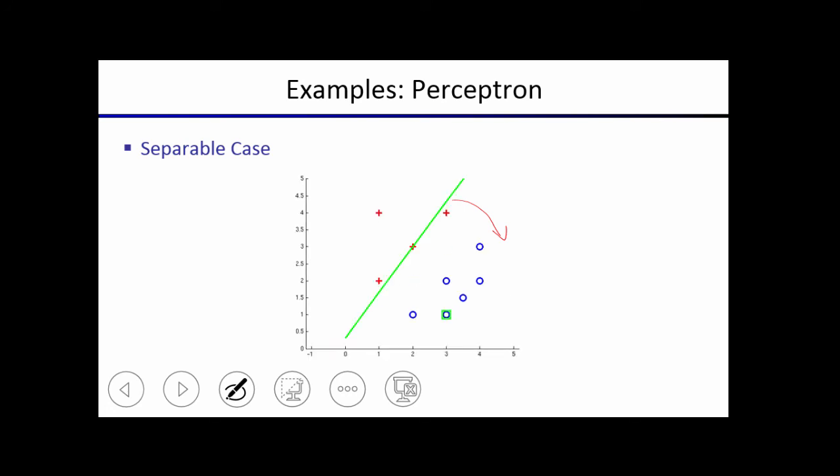And then you look at another point which will move it back in the other direction. And it keeps on thrashing around until finally, at some point, it will reach the location where all of the data points are correctly classified. And once all the data points are correctly classified, then it's done. And it stops iterating. There's no more updates.